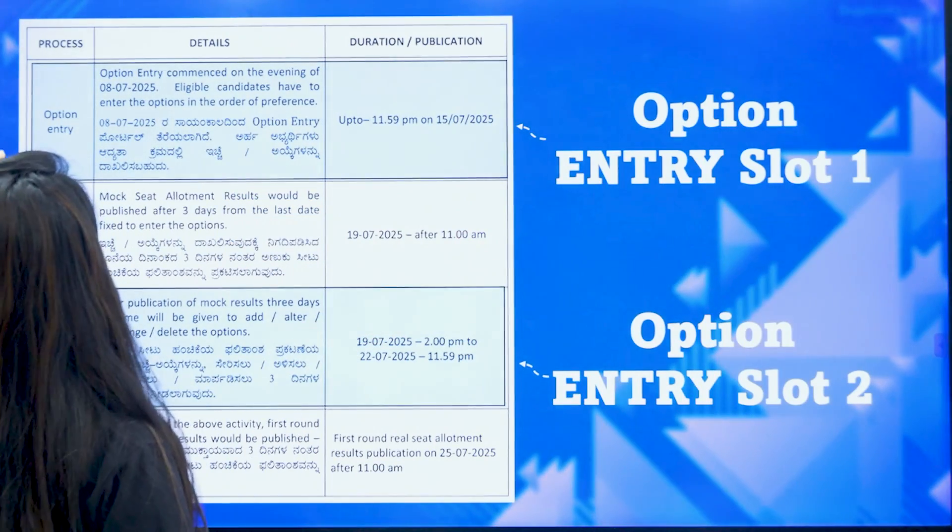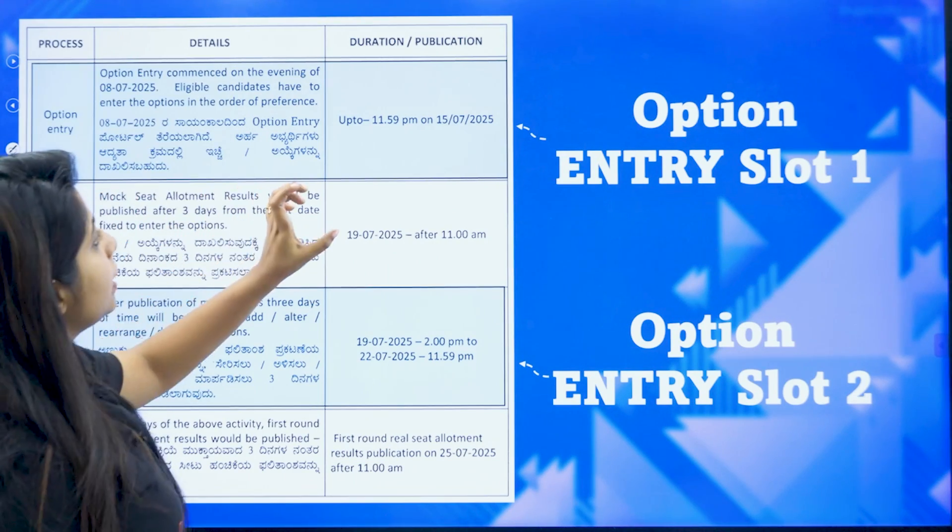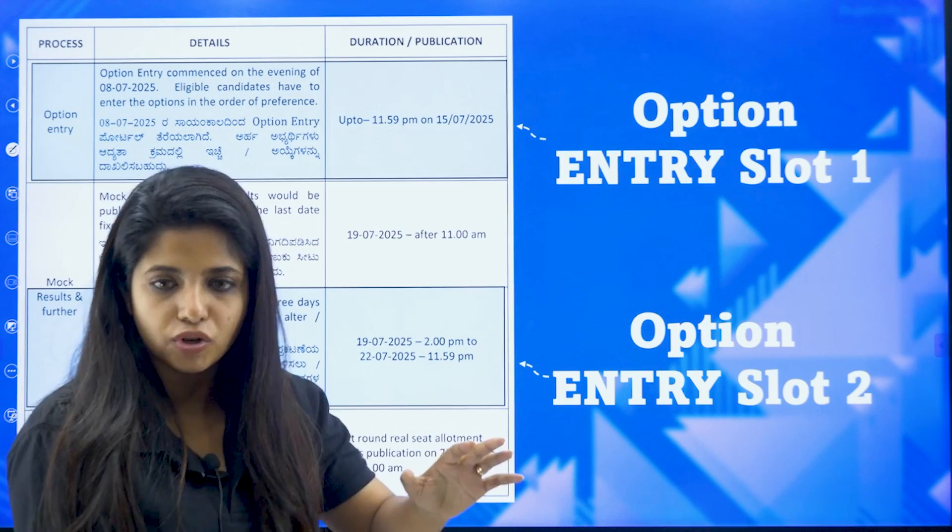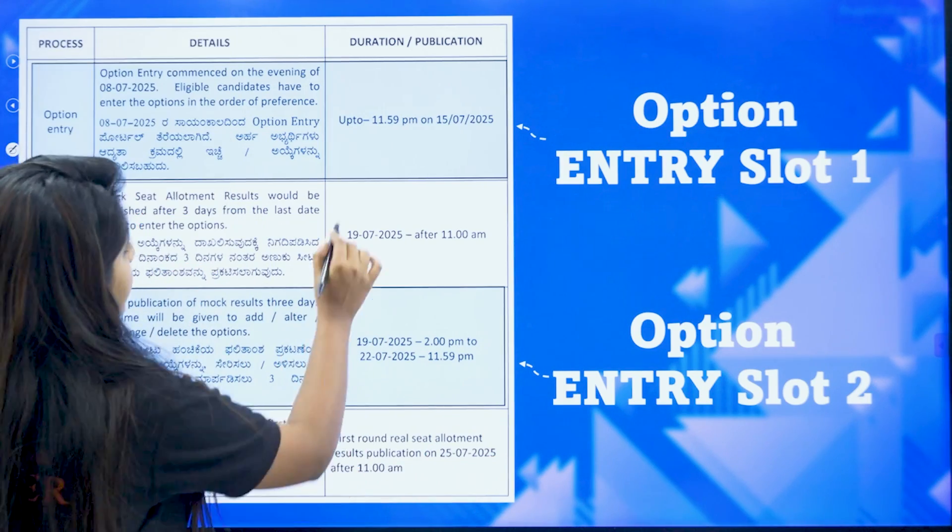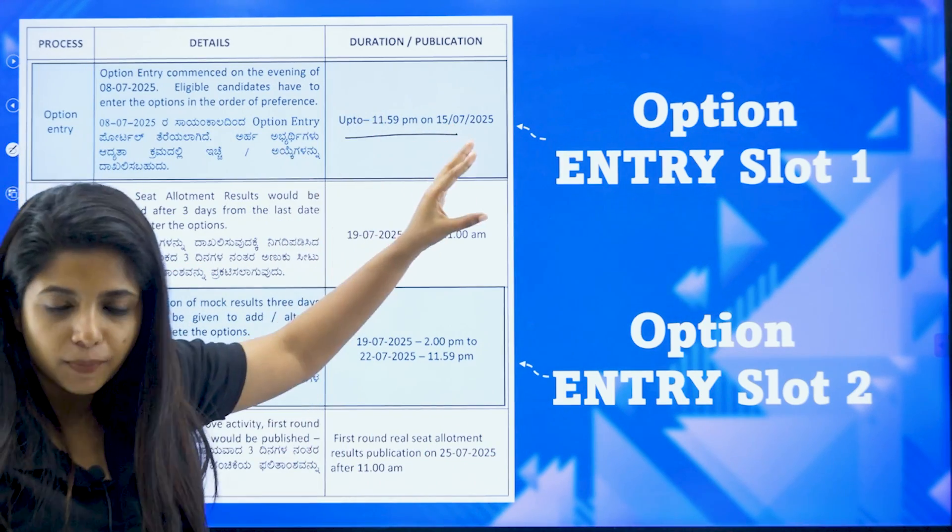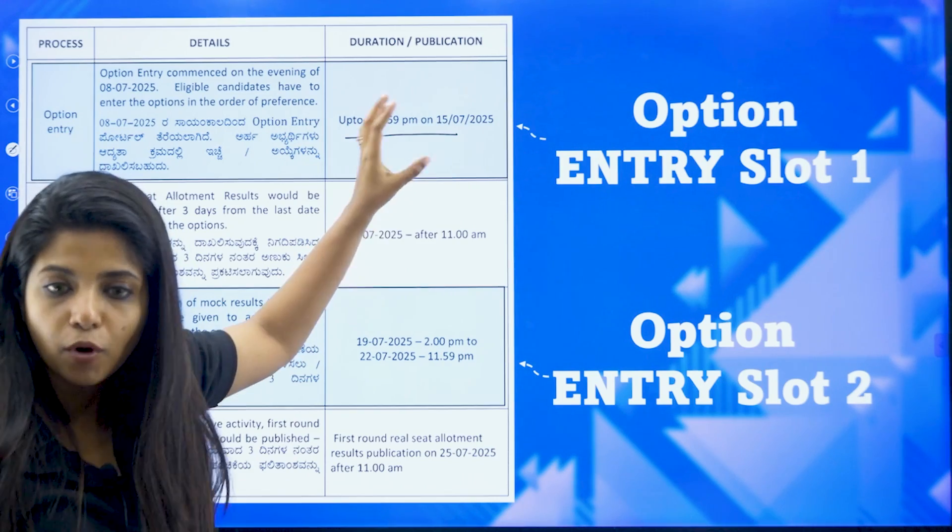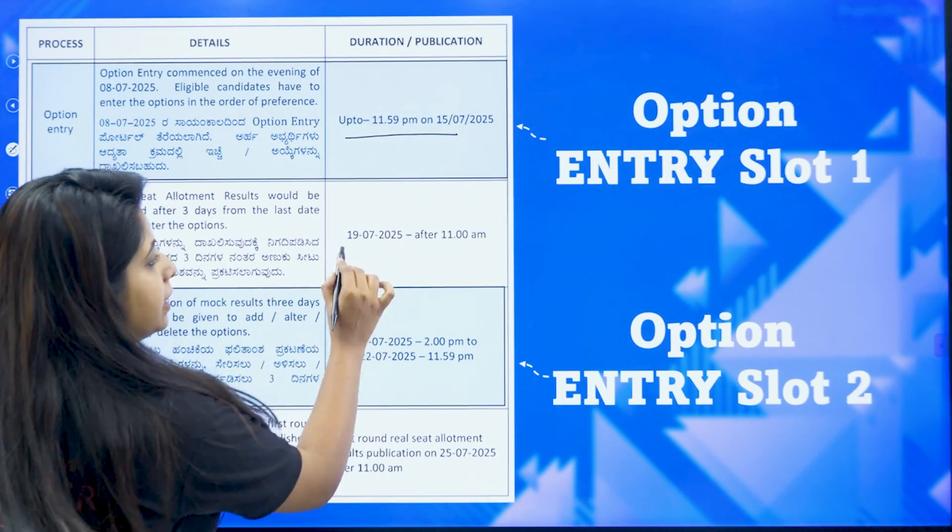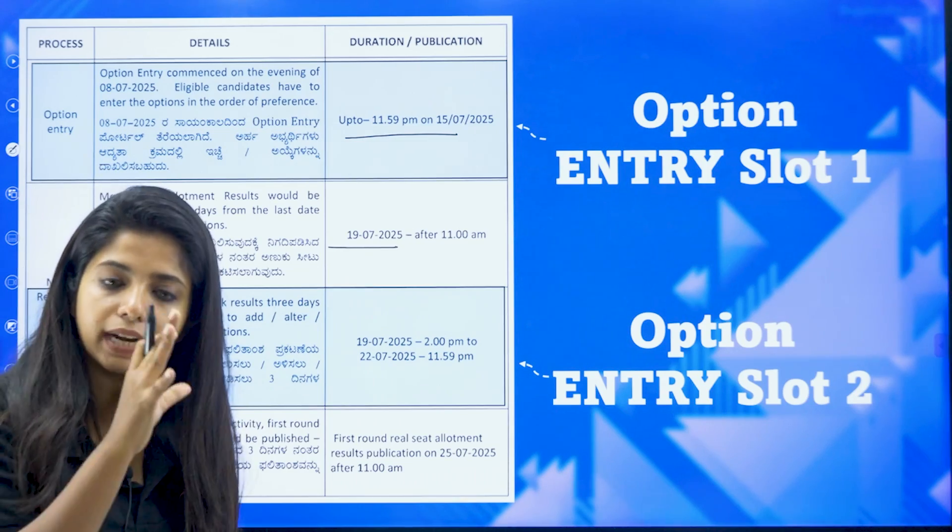So first of all, my dear children, you will get a chance to do option entry between this particular period, that is from 8th of July to 15th of July. You will be filling in the options, right? So this will be known as mock allotment. Further, once you have filled in the options for mock allotment, what will happen? You will get the result when? On 19th. On 19th of July, you will get the result.